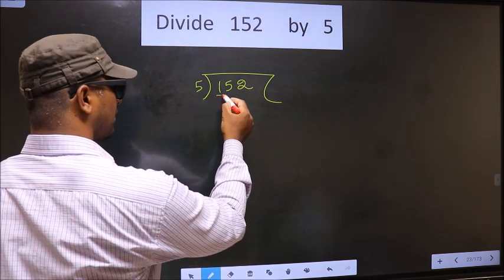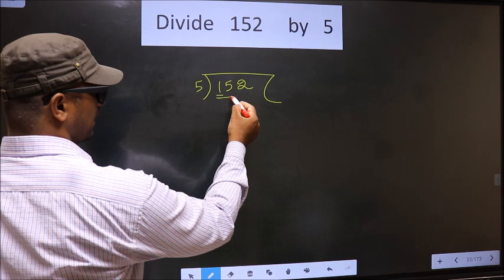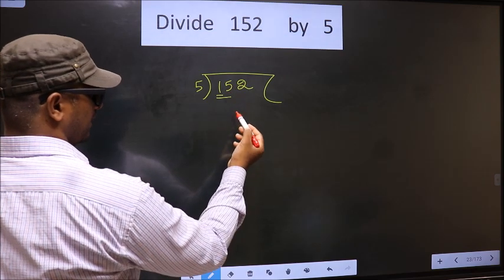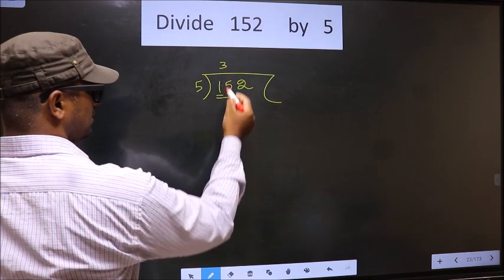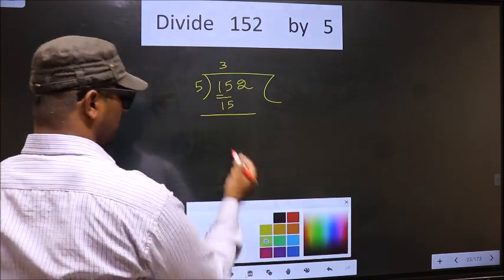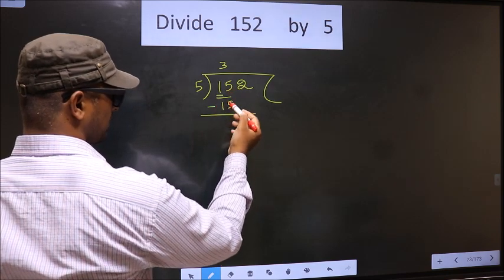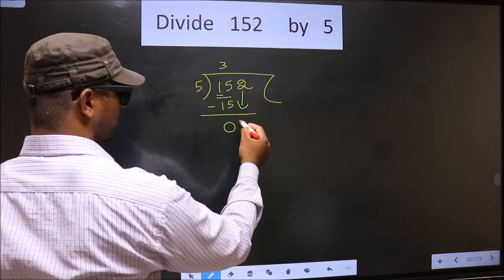Now here the first number is 1, which is smaller than 5. So we take two numbers, that is 15. When do we get 15 in the 5 table? 5 times 3 is 15. Now you subtract. 15 minus 15 equals 0. Now you bring down the next number, that is 2.